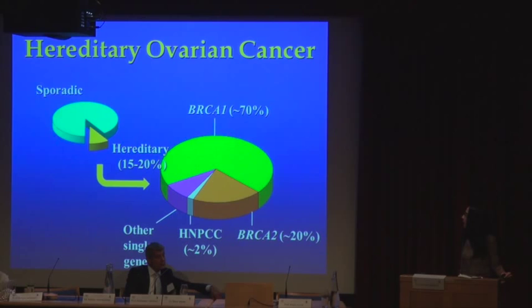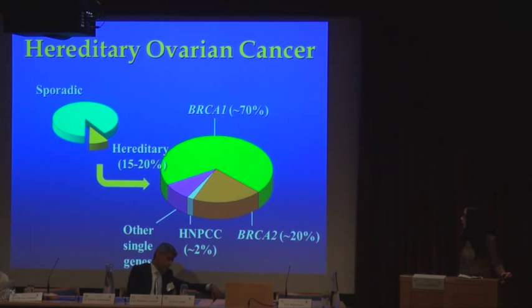Up to 20 percent of ovarian cancer cases in any population are estimated to be hereditary. Thousands of mutations in the BRCA1 and BRCA2 genes have been identified, which affect protein function, predisposing to breast and ovarian cancer.